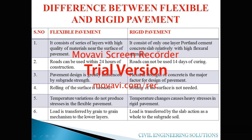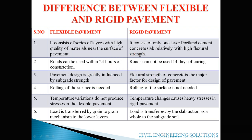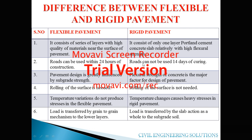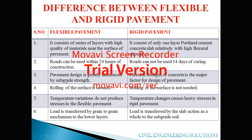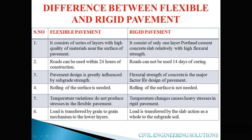After construction of flexible pavement, roads can be opened to traffic within 24 hours. However, for rigid pavement, roads cannot be opened after 24 hours — they must be cured for a minimum of 14 days to gain maximum strength before opening to traffic. For flexible pavement, the pavement design is generally influenced by subgrade strength, whereas in rigid pavement, the design totally depends upon the flexural strength of the concrete.